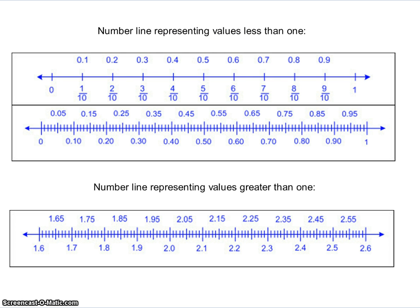Number lines representing values of less than 1 can easily be broken into tenths or hundredths. To break it into tenths, you would need to divide the number line from 0 to 1 into 10 equal sized spaces, as you can see as I label here.